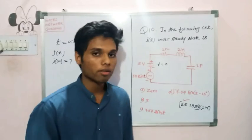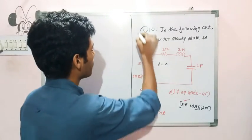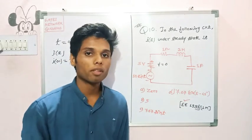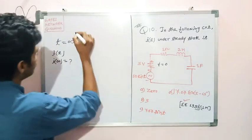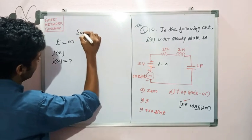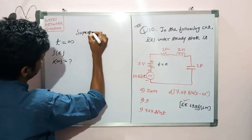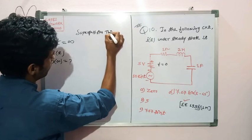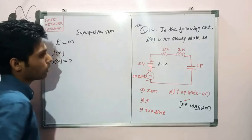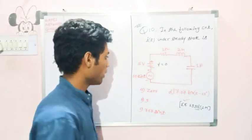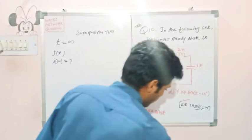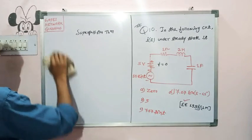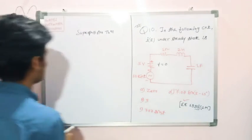Whenever this kind of circuit comes up — with two different frequency components — the only method to solve it is the superposition theorem. These circuits can be solved only by superposition theorem. We consider one voltage source at a time, with the other replaced by its internal resistance.